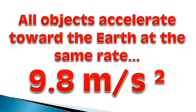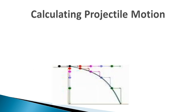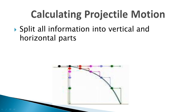The key point is that all objects accelerate towards the Earth at the same rate: 9.8 meters per second squared. To calculate projectile motion, we split all information into vertical and horizontal parts.